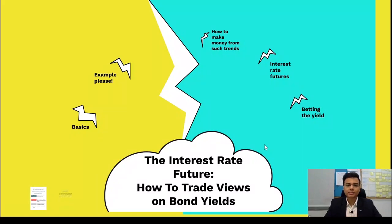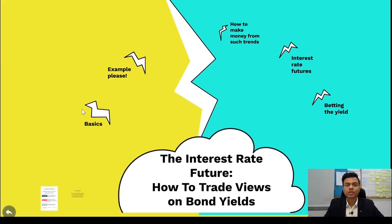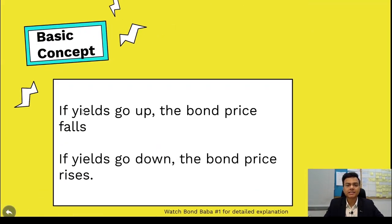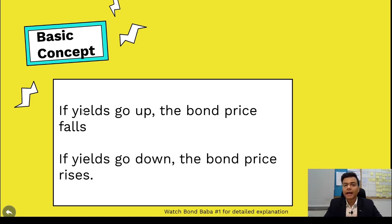Let's start from the basics. If you remember, in the first video of Bond Baba we discussed bond yields and prices. When bond yields go up, the bond prices go down. And when the bond yields fall, the bond prices tend to go up. This is the basic concept you need to keep in mind before you can understand interest rate futures.